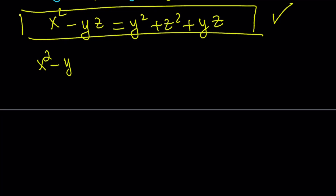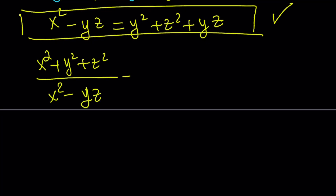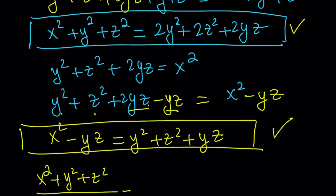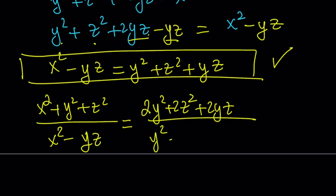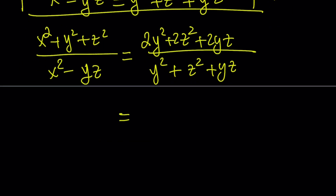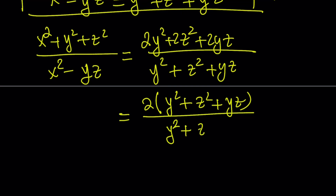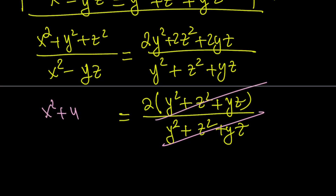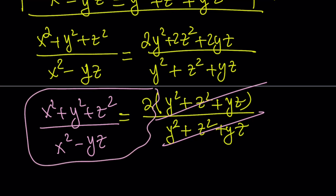So we were trying to evaluate x squared minus yz divided by x squared plus y squared plus z squared. I'm going to replace x squared plus y squared plus z squared with 2y squared plus 2z squared plus 2yz, and the denominator with y squared plus z squared plus yz. I can take out a 2 in the numerator: 2 times the quantity y squared plus z squared plus yz. That gives me exactly what's at the bottom, so the numerical value is 2. That brings us to the end of the first method.